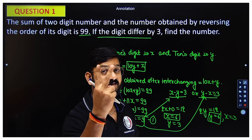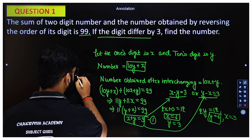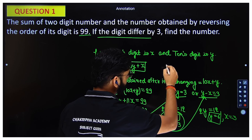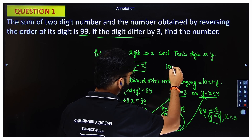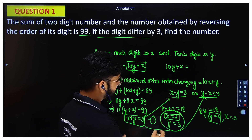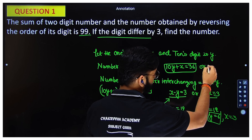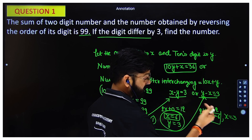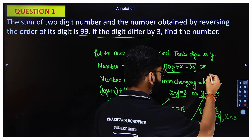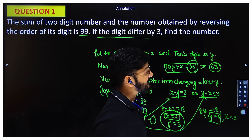So we have two answers. For case one (x=6, y=3), the original number is 10y plus x = 10 times 3 plus 6 = 36. For case two (y=6, x=3), the number is 10 times 6 plus 3 = 63. So the two answers are 36 and 63.